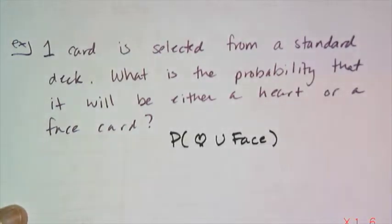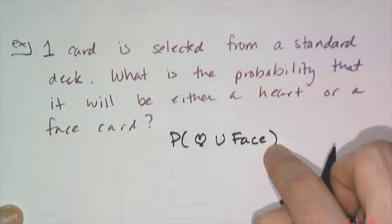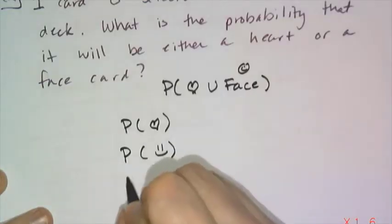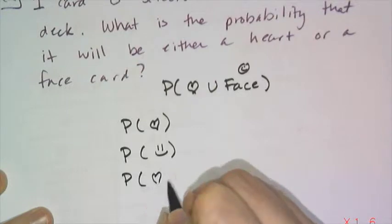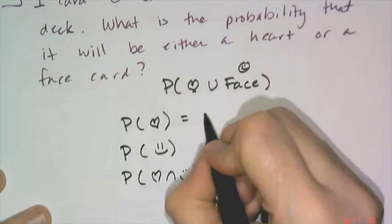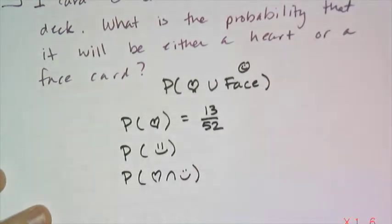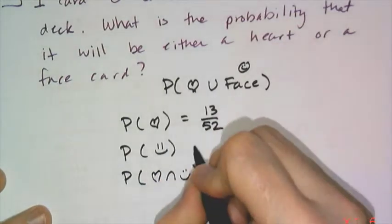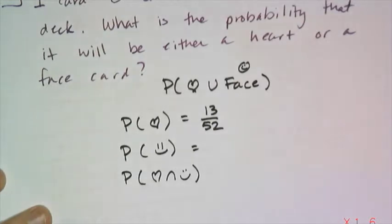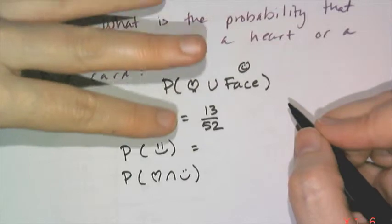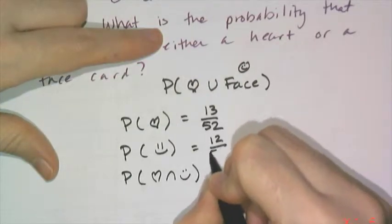I'm trying to find the probability of it being a heart or a face card. The way I find this probability is to find the probability that it's a heart, find the probability that it's a face card, and then find the probability that it's both a heart and a face card. I know that I have 13 hearts in a deck, so the probability that a card drawn at random is going to be heart is 13 out of 52. And I know that there are 12 face cards, and a face card is a card with a face, meaning Queen, Jack, and Kings.